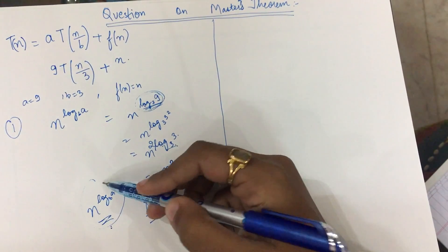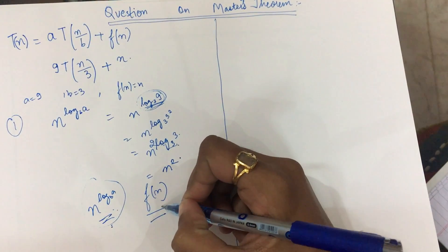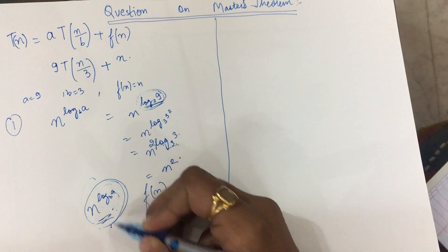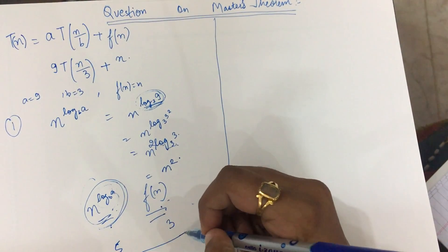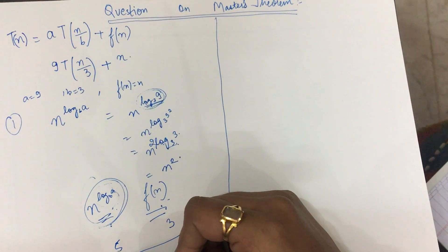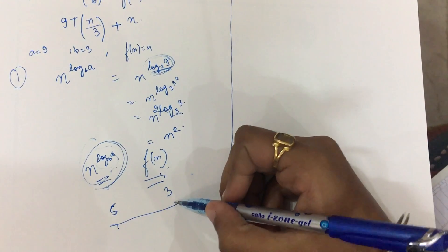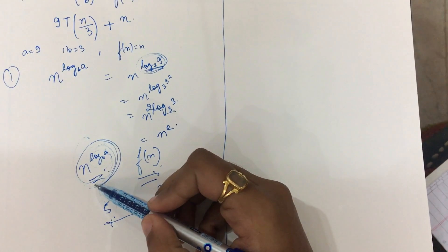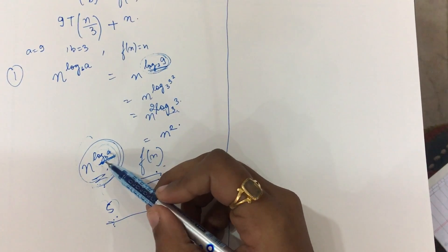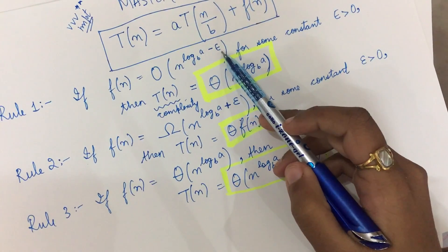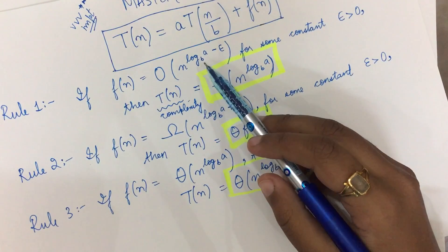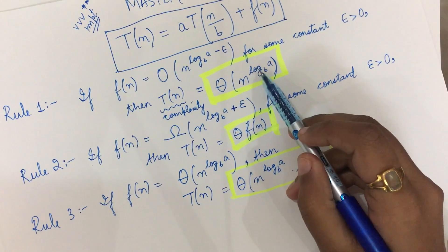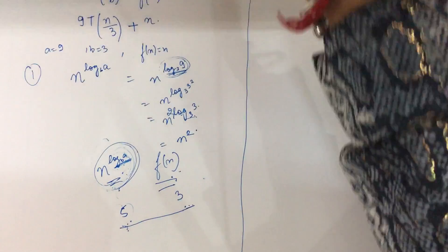Now, if n^(log_b a) is greater than f(n), that means I have to subtract something from it to make them equal. For example, if one side is 5 and the other is 3, to make 5 equal to 3, I subtract a constant from it. That is Rule Number 1 — when n^(log_b a) is polynomially larger, I subtract some constant, giving the complexity by Rule 1.